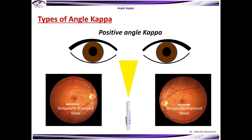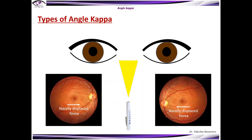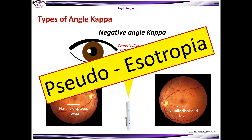Types of angle kappa. There is a positive angle kappa, where the corneal reflex is nasal and the fovea can be temporally displaced, and clinically the patient presents with pseudoexotropia. Normally, patients have a physiological positive angle kappa as the fovea is located five degrees temporal to the center of the posterior pole. Negative angle kappa: the corneal reflex is temporal, the fovea can be nasally displaced, and clinically the patient presents with pseudoesotropia.